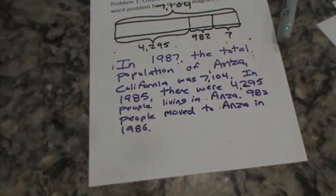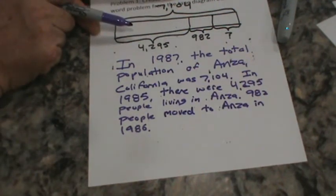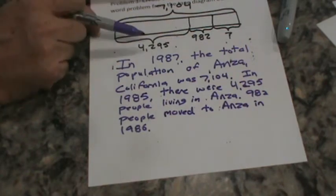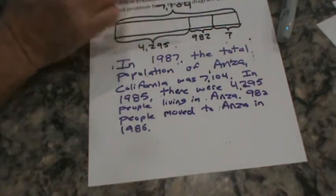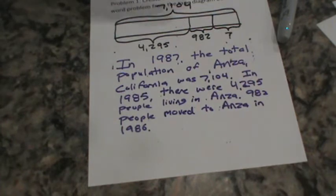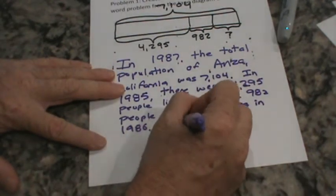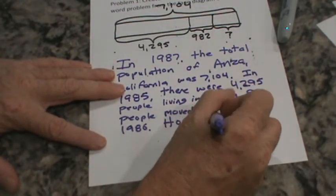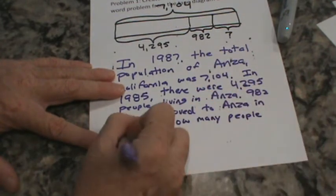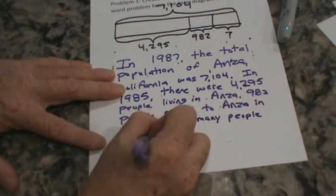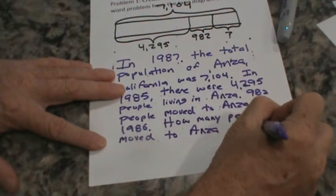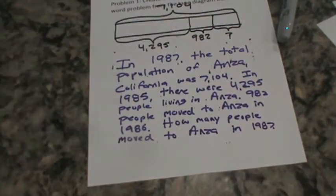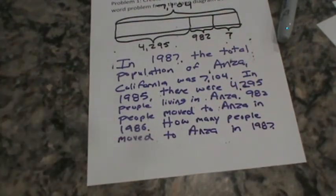So here's the population of Anza in 1985. Here's the population in 1987. So 1985, then 1986, 982 people moved in. We don't know how many people moved in in 1987 to make it the population. So we're going to say, how many people moved to Anza in 1987 to get the population to 7,104? A lot going on in this problem, right?